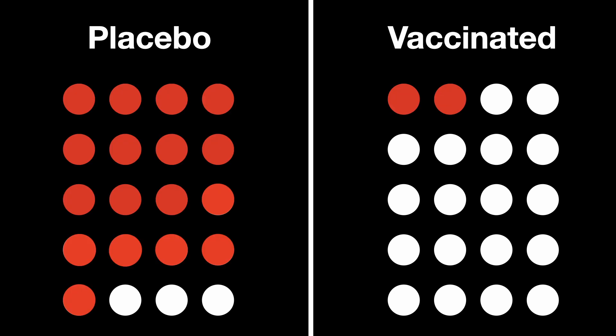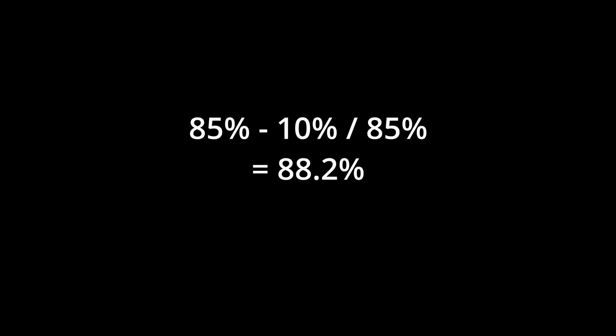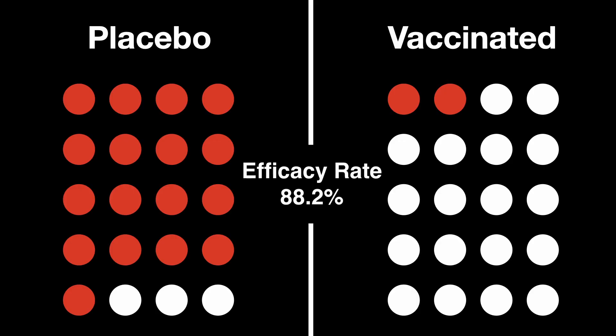After a period of time, they check how many people in the placebo group get infected and how many in the vaccinated group get infected. They get the results and calculate the percentage. The percentage is how unlikely you are to contract COVID-19 with the vaccine.